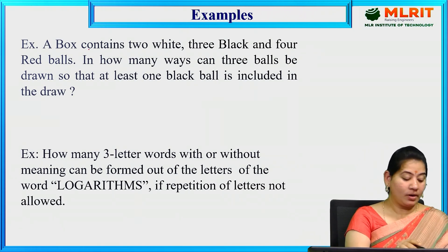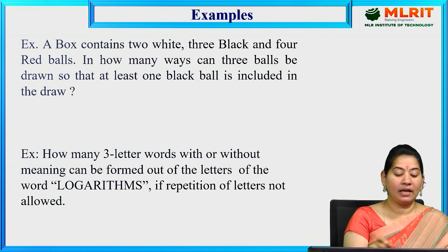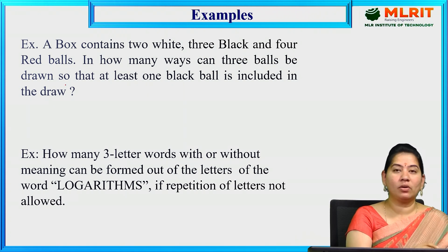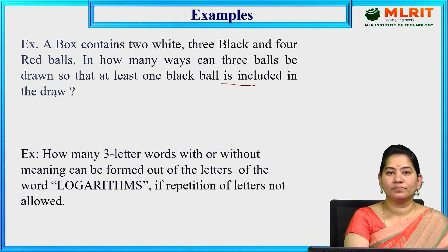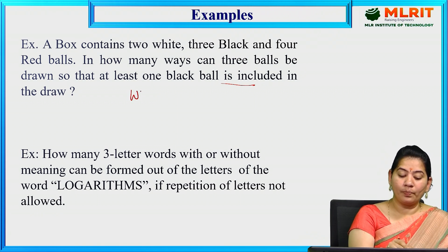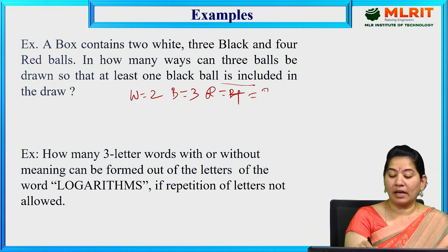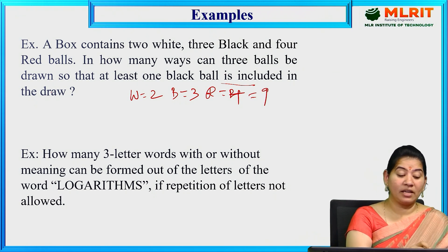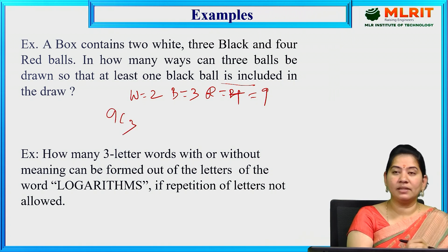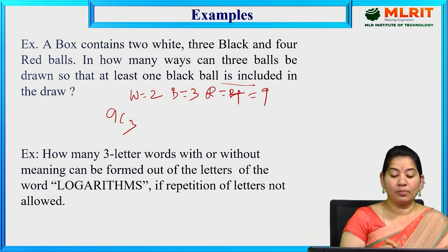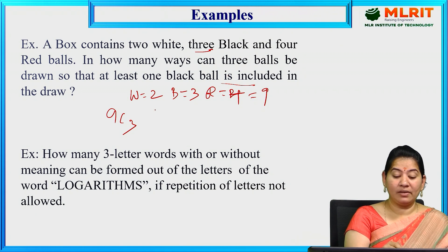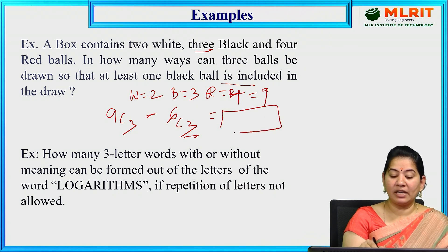A box contains 2 white, 3 black, and 4 red balls — 9 balls total. In how many ways can 3 balls be drawn such that at least one black ball is included? Total ways to draw 3 balls = 9C3. If no black ball is included, we choose from the 6 non-black balls: 6C3. Therefore, ways with at least one black ball = 9C3 − 6C3.